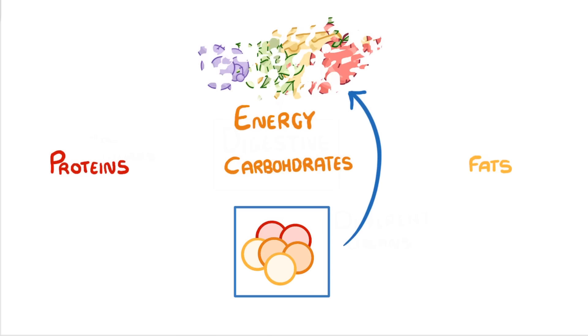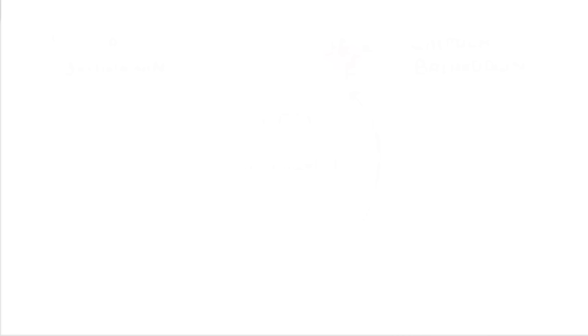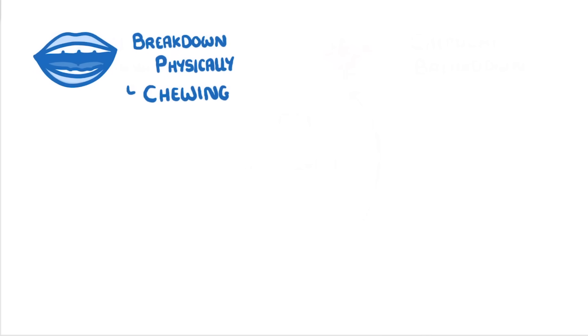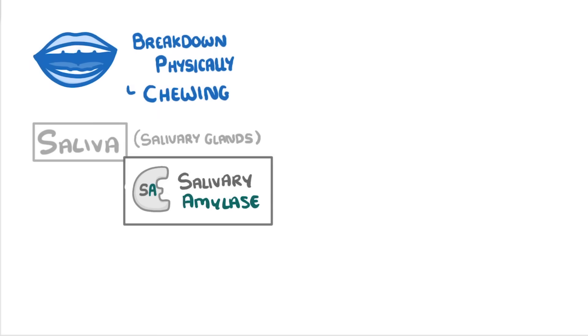This process relies on both physical breakdown and chemical breakdown by enzymes, as we'll see. Let's start at the top. Once you place some food in your mouth, you break it down physically by chewing. You also release saliva from your salivary glands, which helps make the mixture more liquid and also contains salivary amylase, which is an enzyme that helps break down carbohydrates.